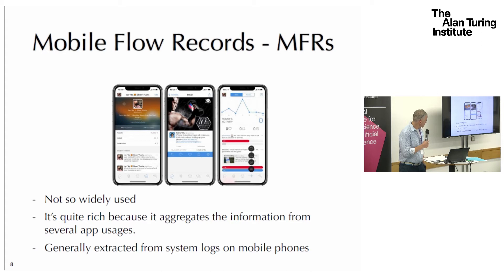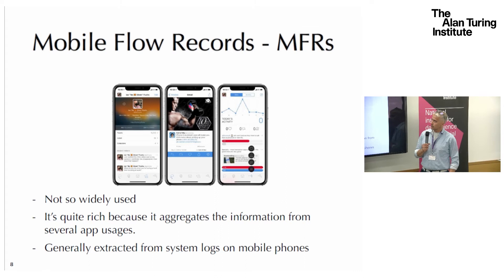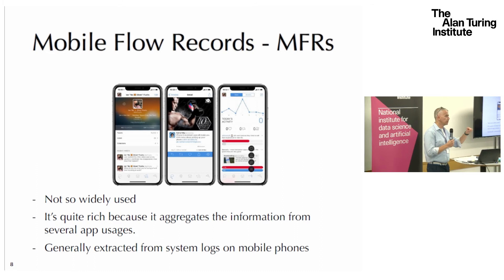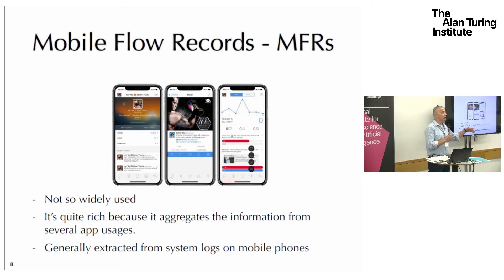This is a new one that is starting to emerge — I've never used it myself, but a colleague does. Your mobile phone has basically a record of all the apps you use — a system log. Sometimes you open Instagram but when you go out you tweet. We're trying to integrate this using system logs, and this is now being called mobile flow records.